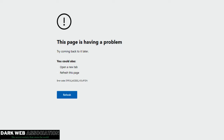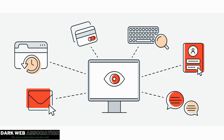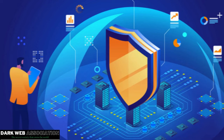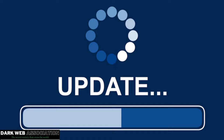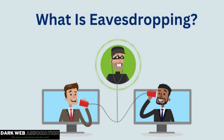A keylogger is a type of malicious software or hardware that secretly records keystrokes on a computer or device. It captures sensitive information such as passwords and login credentials, posing a security threat. If a keylogger is installed, an attacker can silently record keystrokes to access confidential information like online banking credentials. To protect against keyloggers, use antivirus software, keep systems updated, be cautious with downloads, and use two-factor authentication.